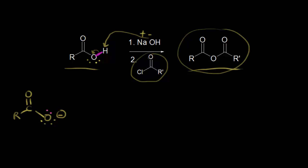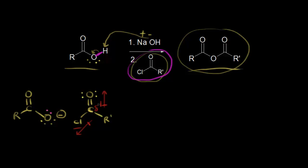In the second step, we add our acyl chloride, and it's going to be our electrophile. We have the oxygen withdrawing electron density from this carbon because oxygen is more electronegative than carbon. And then we also have this chlorine doing it as well — chlorine is also more electronegative than carbon. So we have these two groups withdrawing electron density, making this carbon definitely electrophilic.